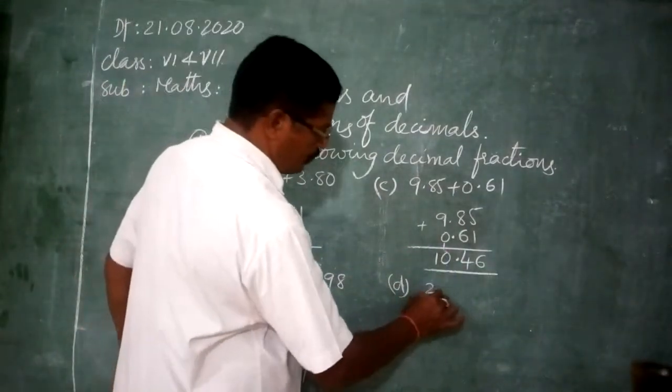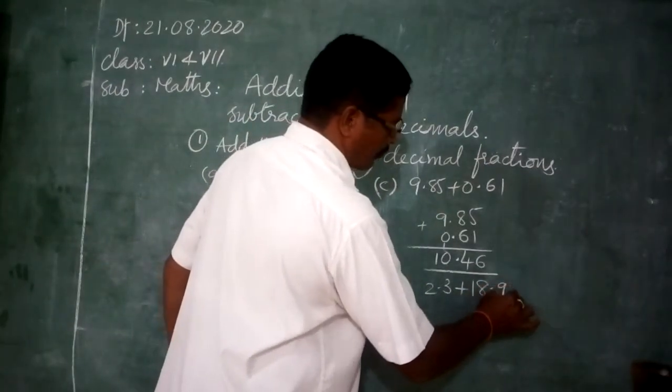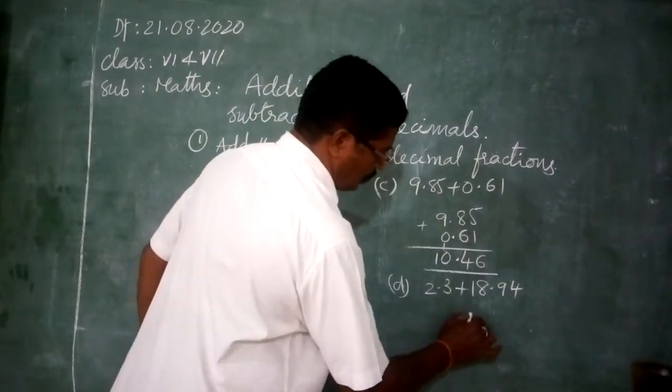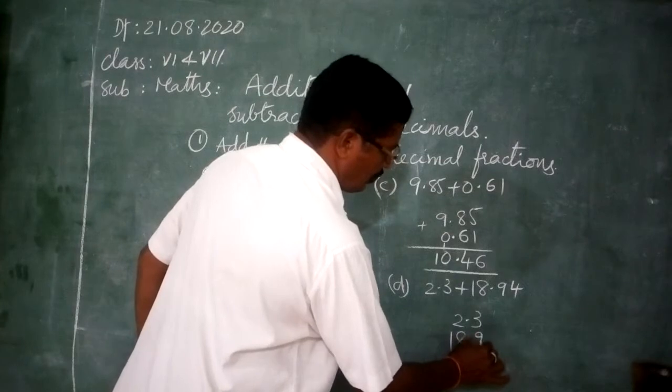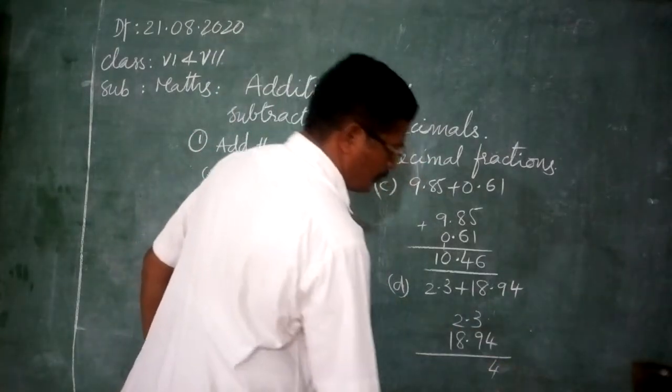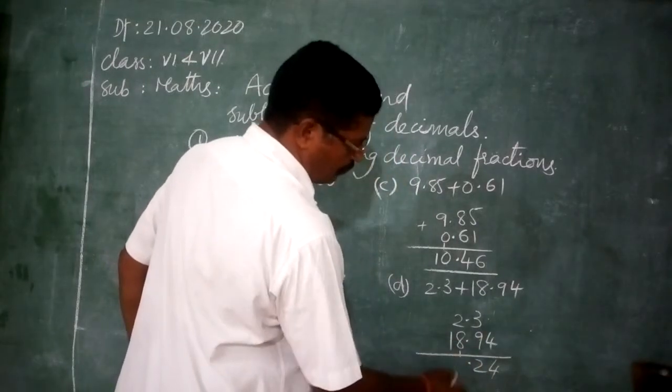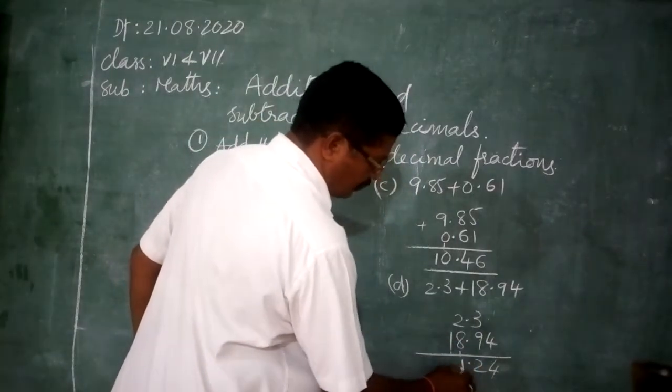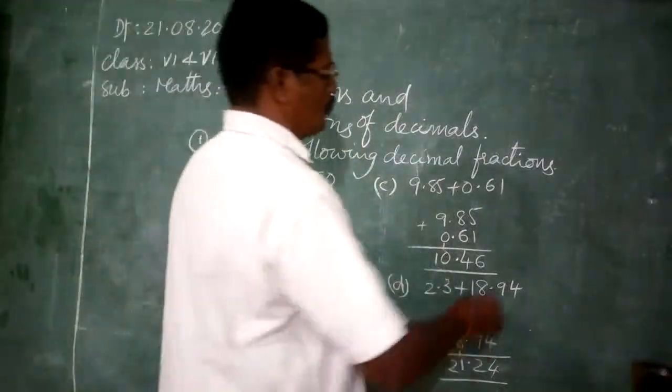2.3 plus 18.94. 2.3, 18.94. Here, 4 only. 9 plus 3, 12. 8 plus 2, 10 plus 1, 11. 21.24. One more question.